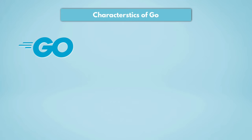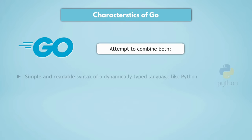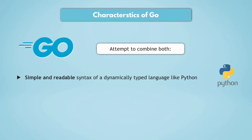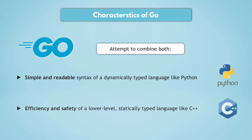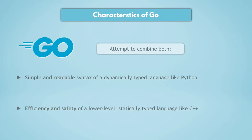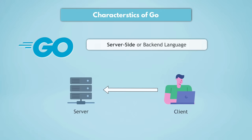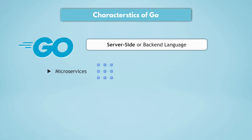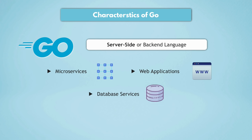The main use case of Go, or what it's best used for, is writing applications that need to be very performant and will run on modern, scaled, and distributed infrastructure with hundreds and thousands of servers, typically on a cloud platform. For developing Go, they wanted to take the simplicity of syntax of a higher-level language like Python and the speed and efficiency of a lower-level language like C++. Go is used on the server side or backend side of applications — ranging from microservices and web applications to database services.